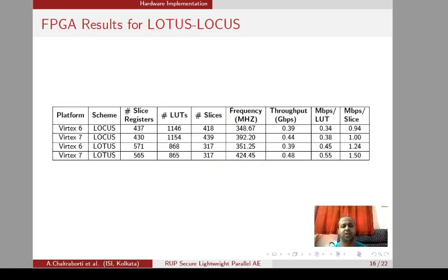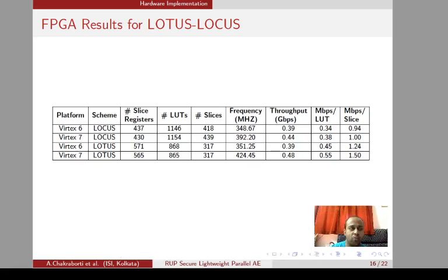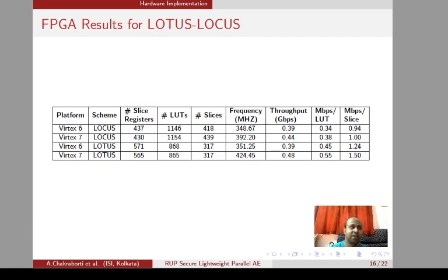In the FPGA results for LOTUS and LOCUS, the state size of LOCUS is smaller than the state size of LOTUS. However, overall LOTUS outperforms LOCUS in terms of LUTs and slices, and achieves a slightly better frequency than LOCUS with almost the same throughput. The throughput-area efficiency ratio is significantly better for LOTUS than for LOCUS.